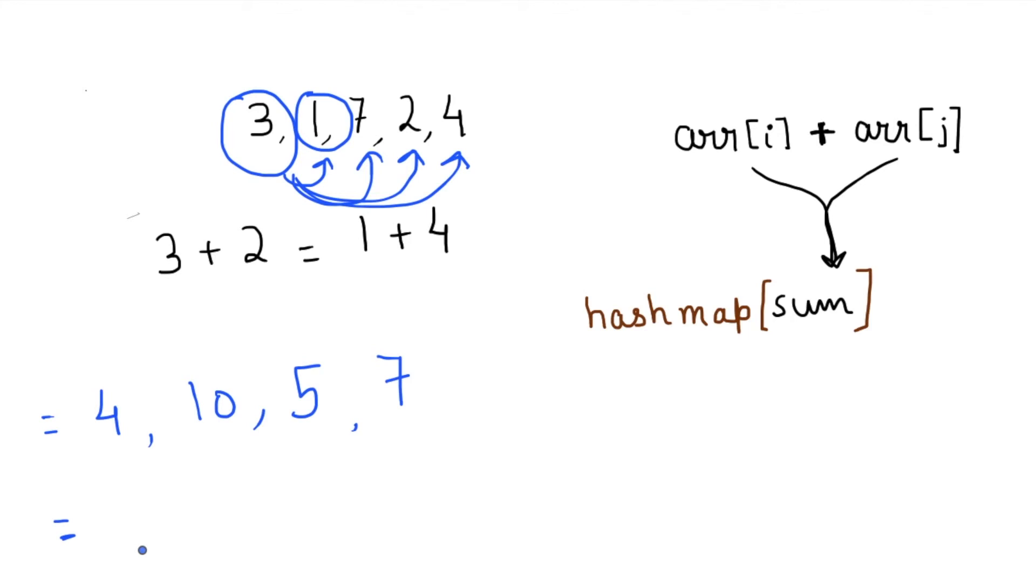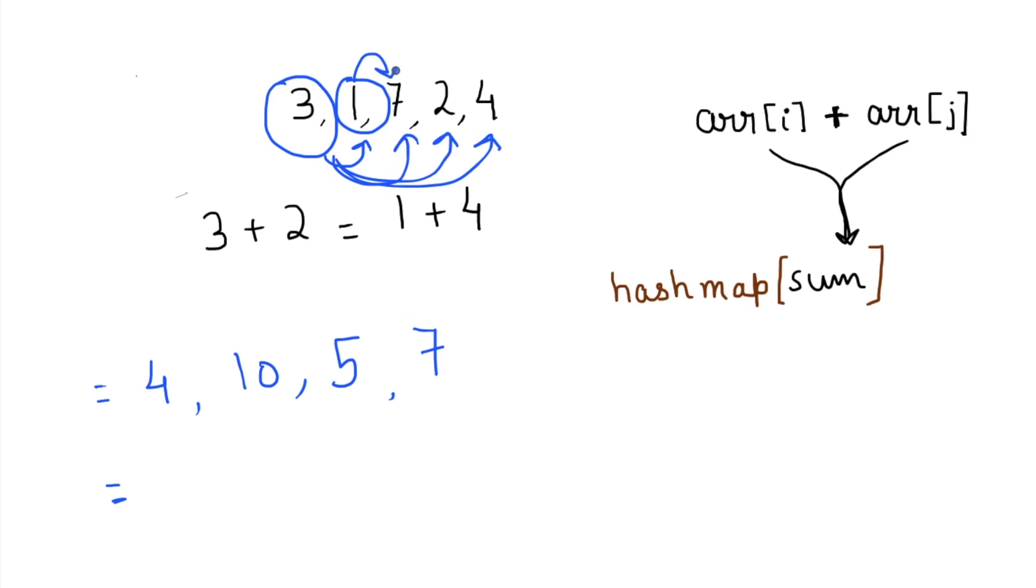I'll try to find all pairs and do a summation. So one plus seven, that is eight, one plus two, that is three, and one plus four, that is five. You can see that the sum five repeats again and I am able to detect that using hash map. So I can say now that there exist four elements where a plus b equals c plus d, that is three plus two, which is five, equals one plus four, which is five.